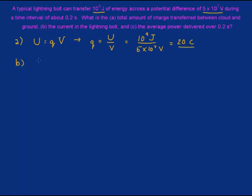For part B we need to know the current, and current is defined as charge per time. So if we take that charge that we just calculated of 20 coulombs and divide it by the time of 0.20 seconds, we're going to get 100 amperes.